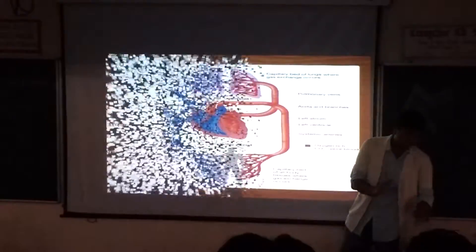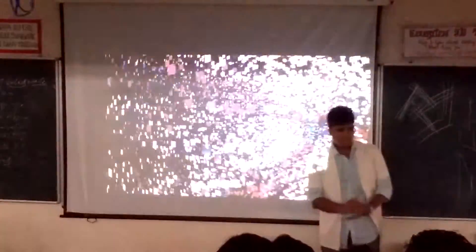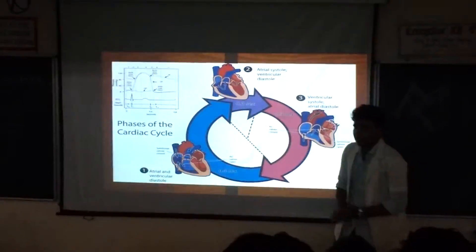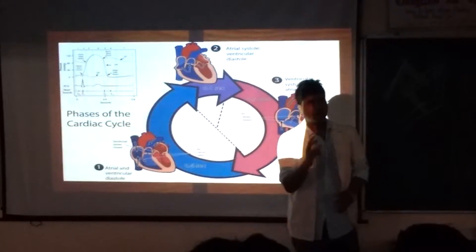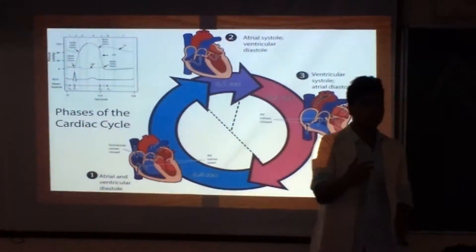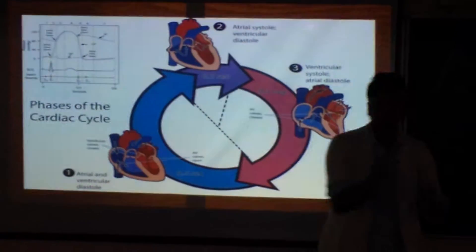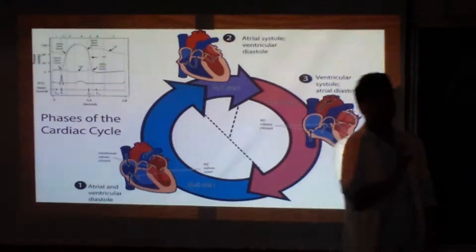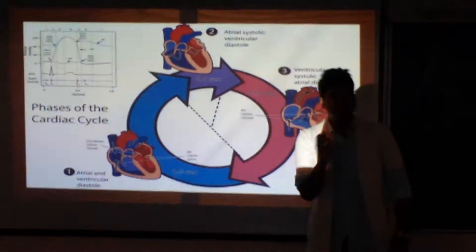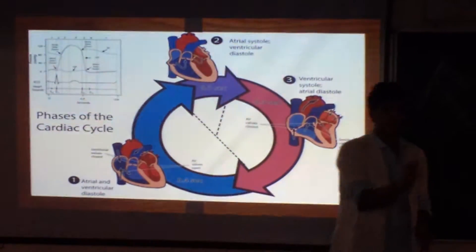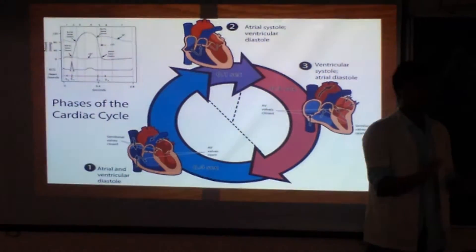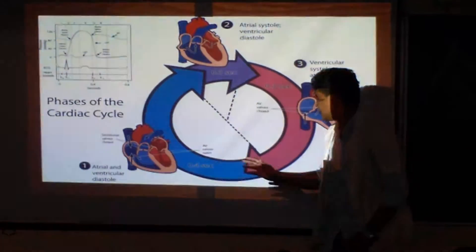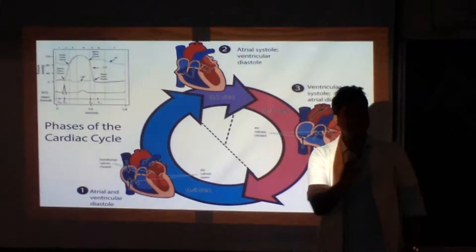Now, what is the cardiac cycle? The cardiac cycle refers to the events that occur during one heartbeat. The normal heart rate is 72 beats per minute.